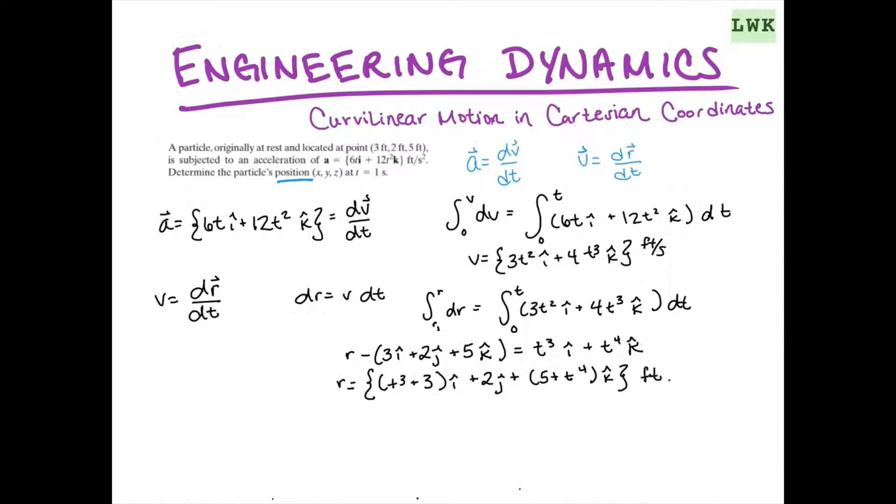And now we're just going to plug in t equals 1. That's going to simplify out to give us our final answer, which is 4i plus 2j plus 6k. So in our x, y, z coordinates, that's going to give us 4, 2, and 6.